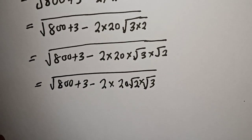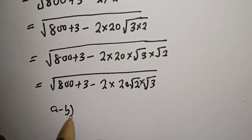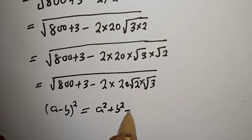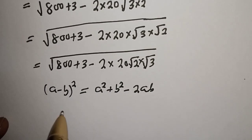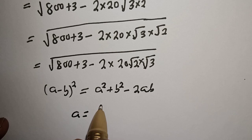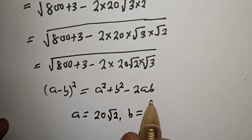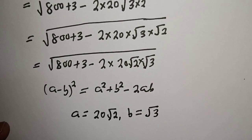From here, recall that (a minus b) squared equals a squared plus b squared minus 2ab. By comparison, a is equal to 20 root 2 and b is equal to root 3.